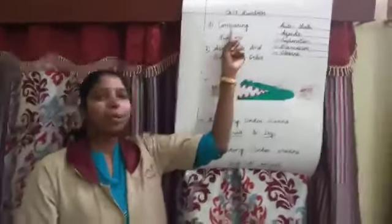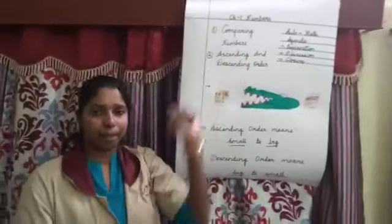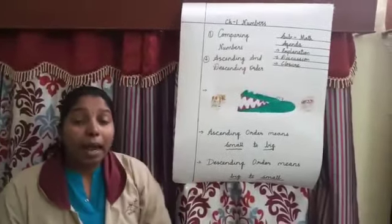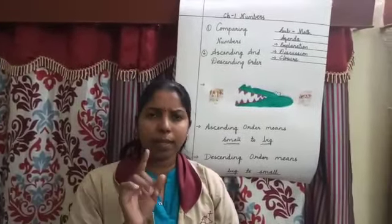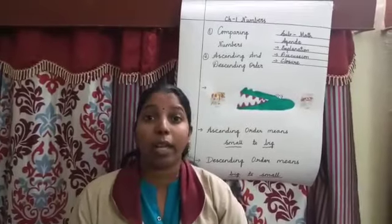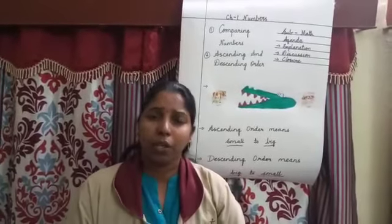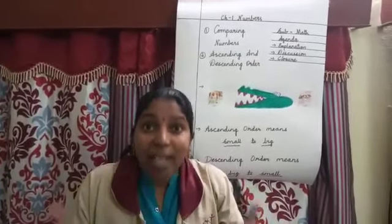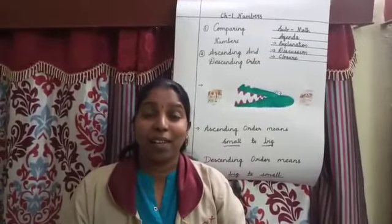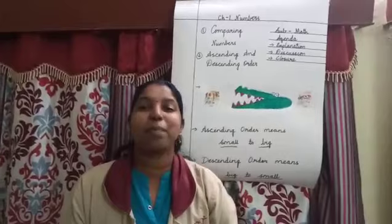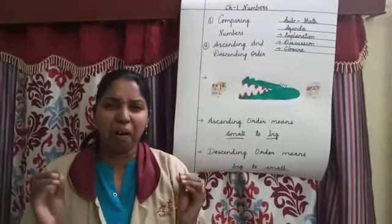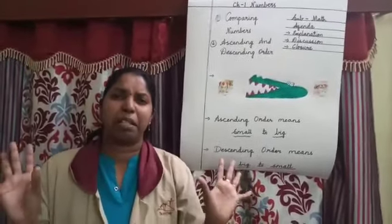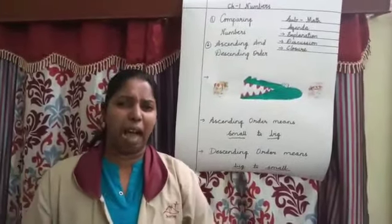Ok children, so now come to comparing numbers. Comparing numbers — I will tell you one thing. Once there lived a crocodile. You know what a crocodile is? So, I call it Mr. Crocky. This crocodile, all the time, used to feel hungry.